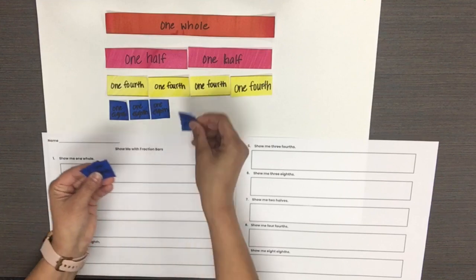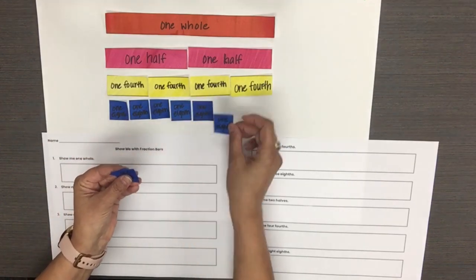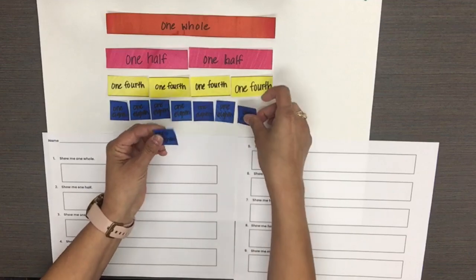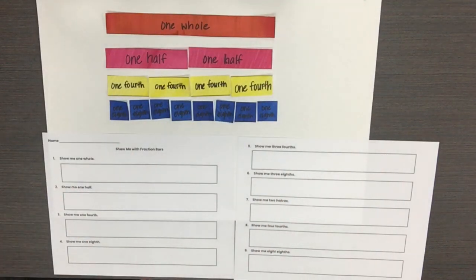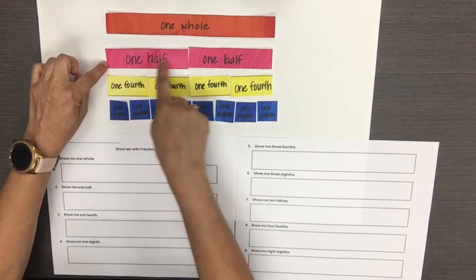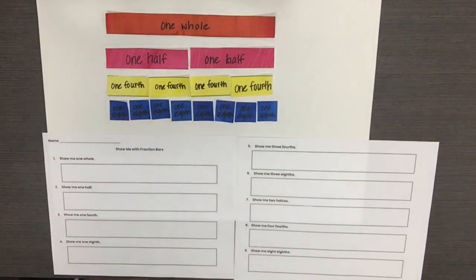Have students fold another bar in half three times, then unfold. Did we partition the bar into equal parts? Yes. How many equal parts did we make? Eight. Have students color the eighths blue and label each part 'one eighth.' Ask: would you rather eat one eighth of a candy bar or one half of a candy bar, and why? The half of a candy bar is larger in size and the eighths are smaller in size.